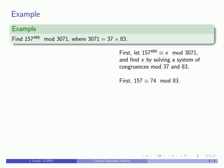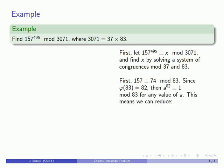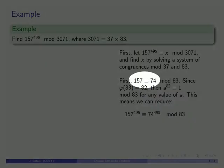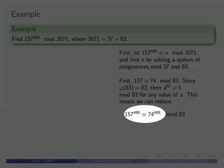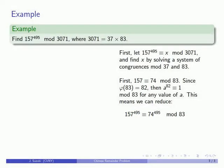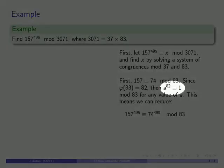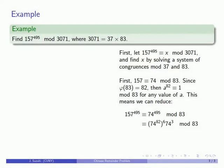First I'll notice is that 157 is 74 mod 83. Since 83 is prime, phi of 83 is 82, so a to the power of 82 is congruent to 1 mod 83 for any value of a. This means I can reduce 157 to the 495th: 157 becomes 74 mod 83. Next I can eliminate powers of 82. Since 495 is 82 times 6 plus 3, this 74 to the 495 becomes 74 to the 82nd to the 6th times 74 to the 3rd.